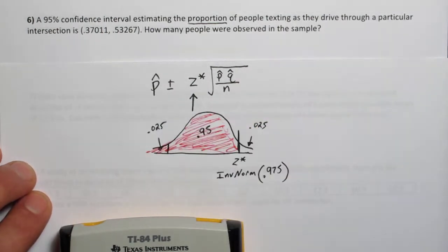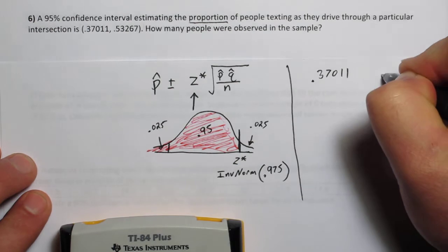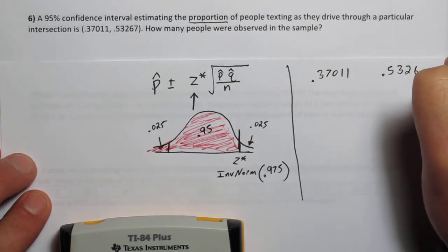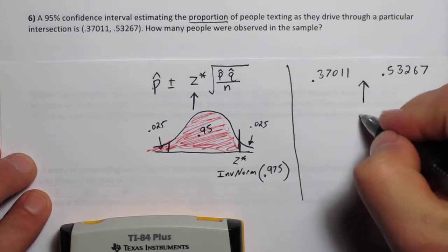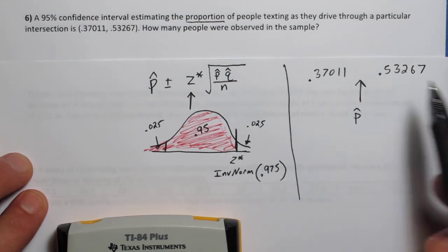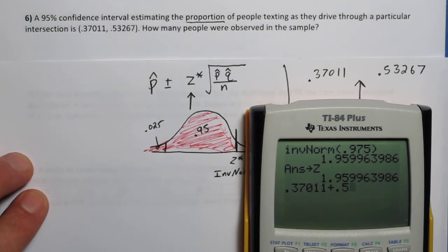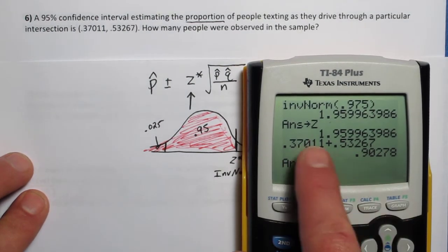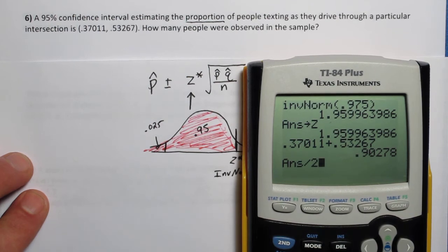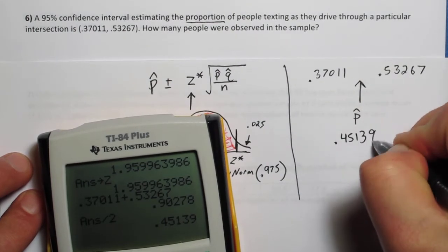Now we need to figure out what p hat is. Here's our interval. Our interval was 0.37011 to 0.53267. The middle of this interval is going to be what p hat is. So the way to find that is you can use the midpoint formula. This plus this divided by 2. It's really just the average between the two points. So I added the intervals, or the bounds of the interval, and I get 0.45139.